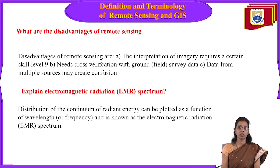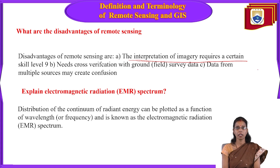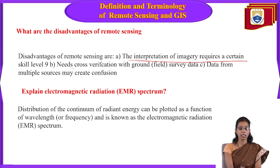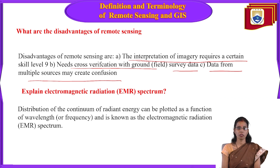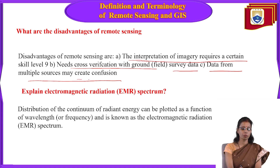The disadvantages of remote sensing: interpretation of imagery requires a certain skill level — a skilled person is required to interpret the data. It needs cross-verification with ground survey data, and data from multiple sources may create confusion.